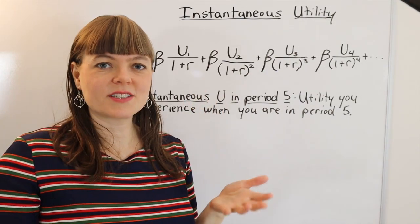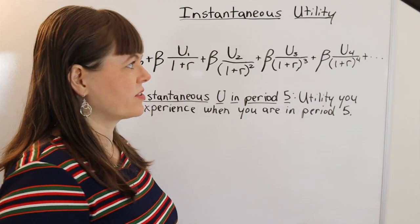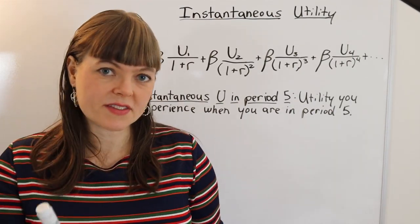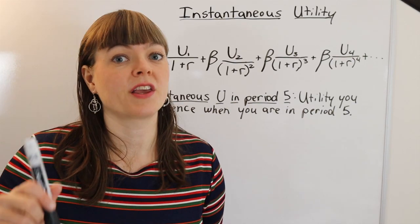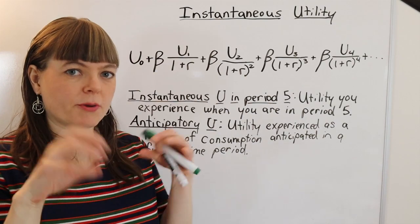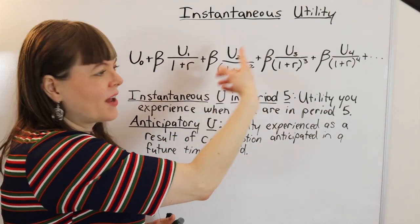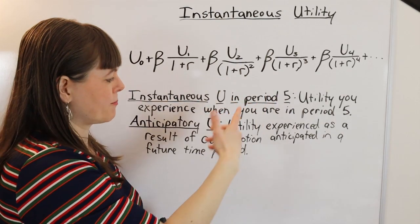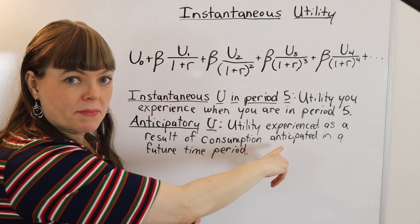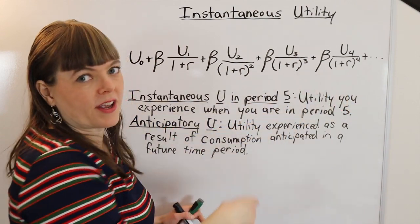However, I would like to introduce a couple of other terms that relate to instantaneous utility and help us think about the future. One of these is going to be anticipatory utility. Anticipatory utility is utility that's experienced instantaneously in a particular time period, and we'll use time period two for this example, in anticipation of consumption that will take place in a future time period.